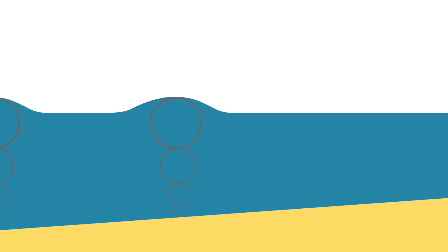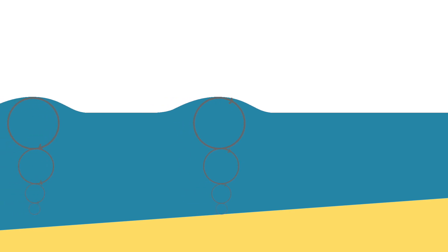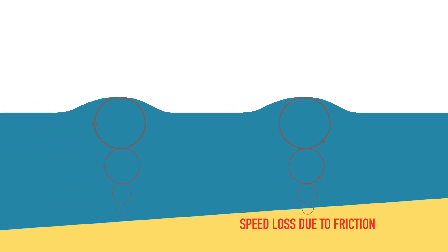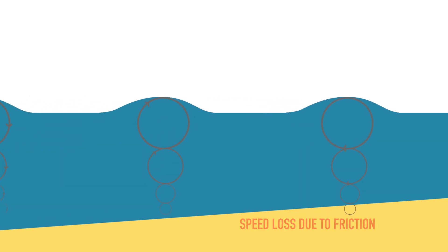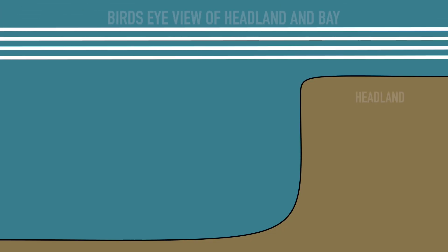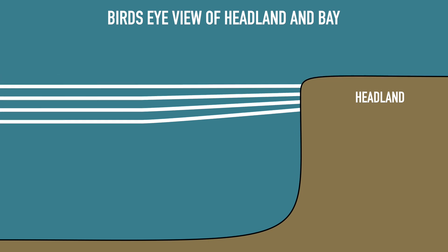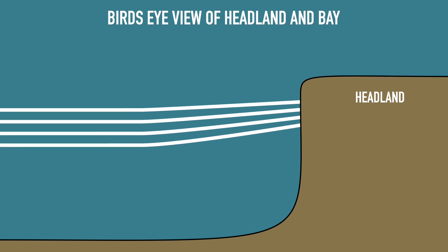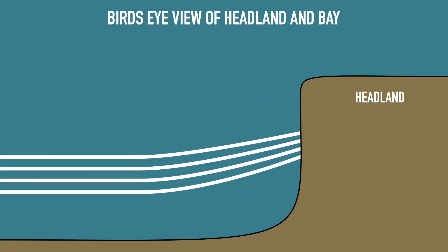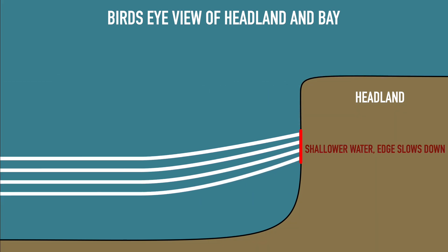The waves not only lose energy when dragging along the ocean floor but also speed, as the friction slows the waves down. This causes waves to bend inwards towards shallower water, a process known as refraction. Refraction helps to direct or align the waves with the coastline and to potentially reach beaches that aren't directly facing the swell direction.